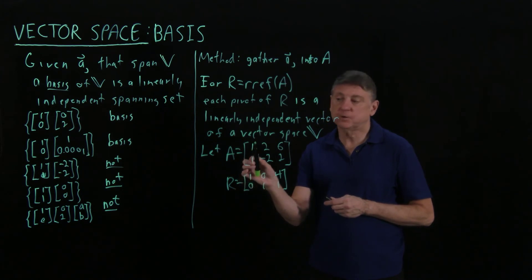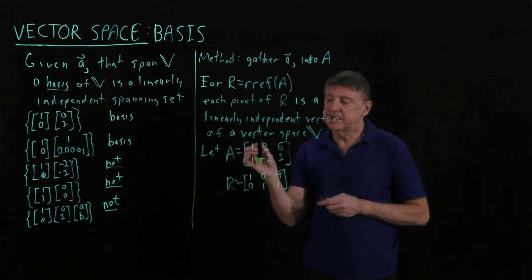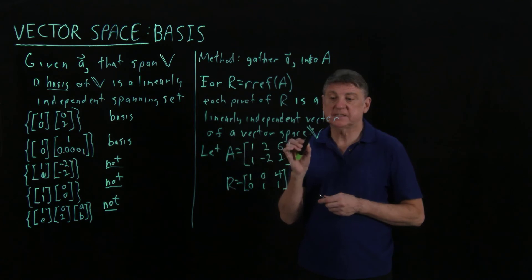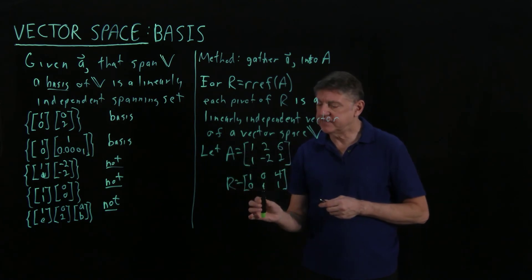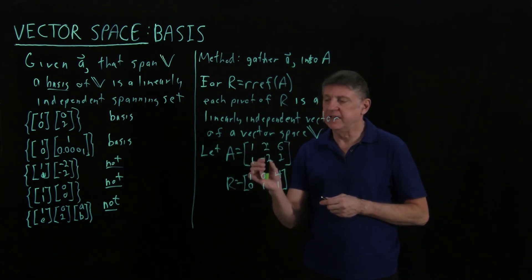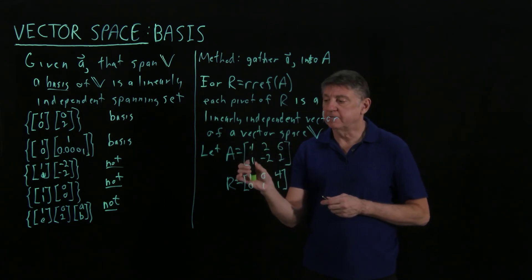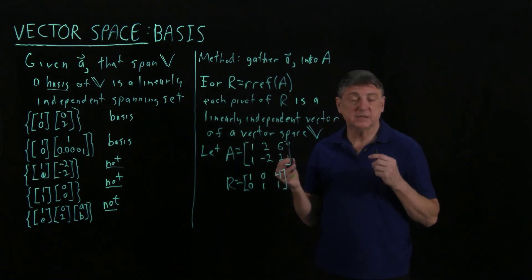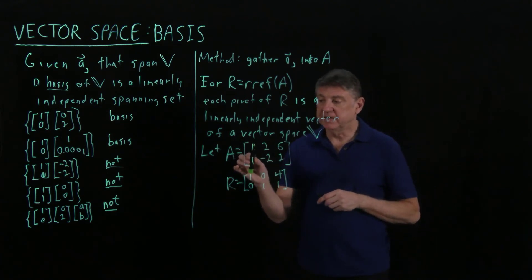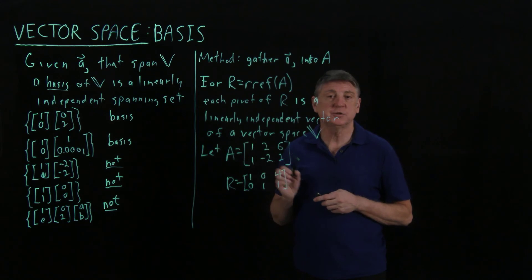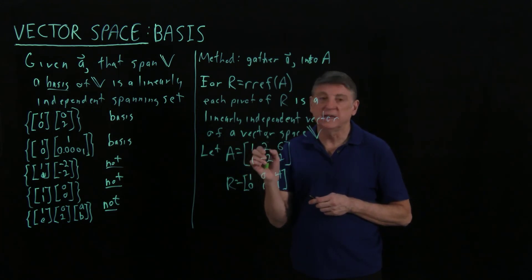And then the second column of A is another part of a basis of a vector space. So if I take these two together, they are a basis for some vector space. Because there are two of them and size 2, I know that the vector space that they are a basis of is R2.